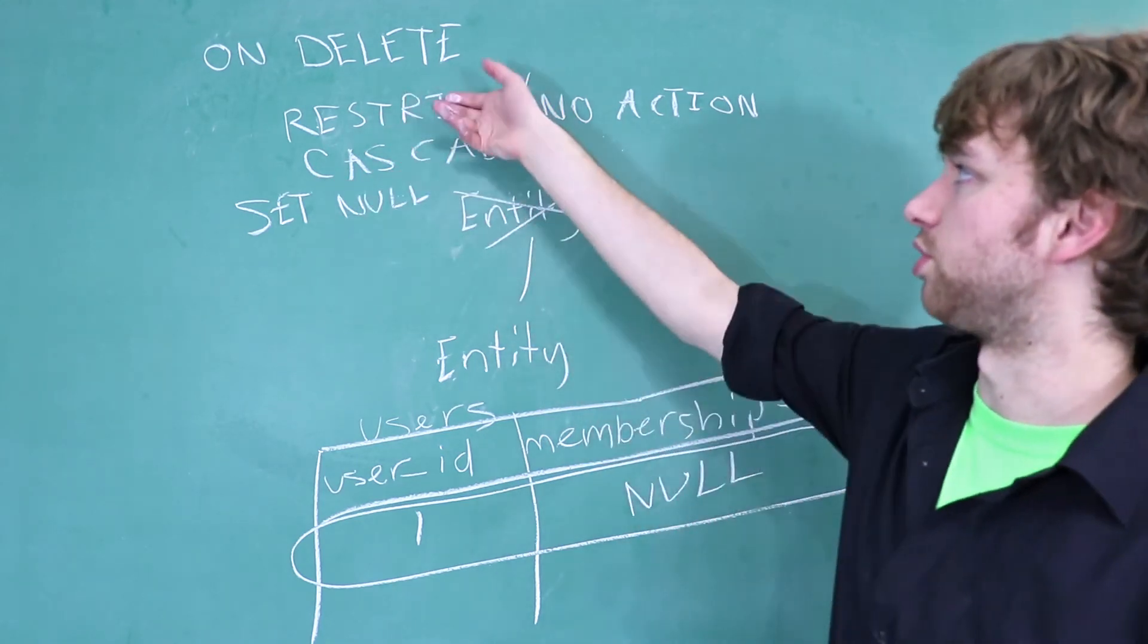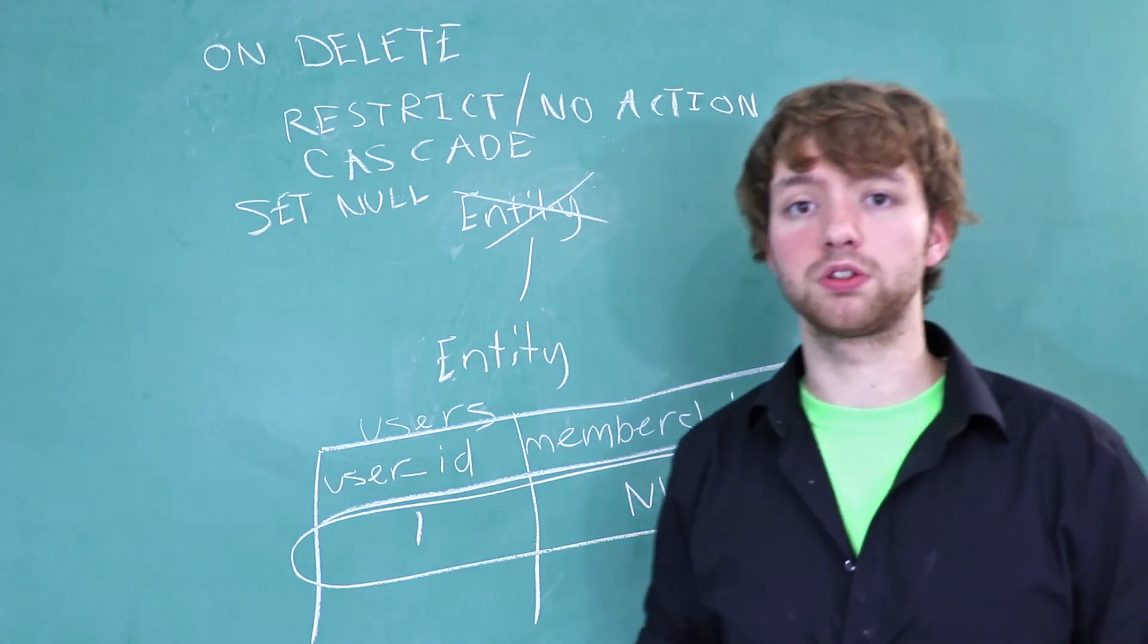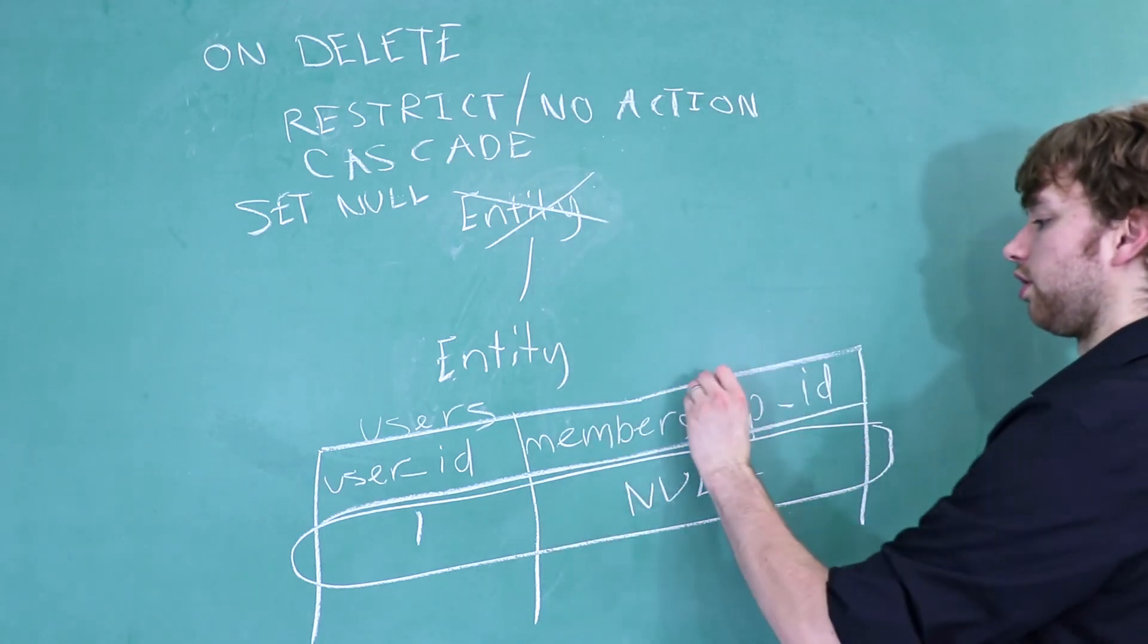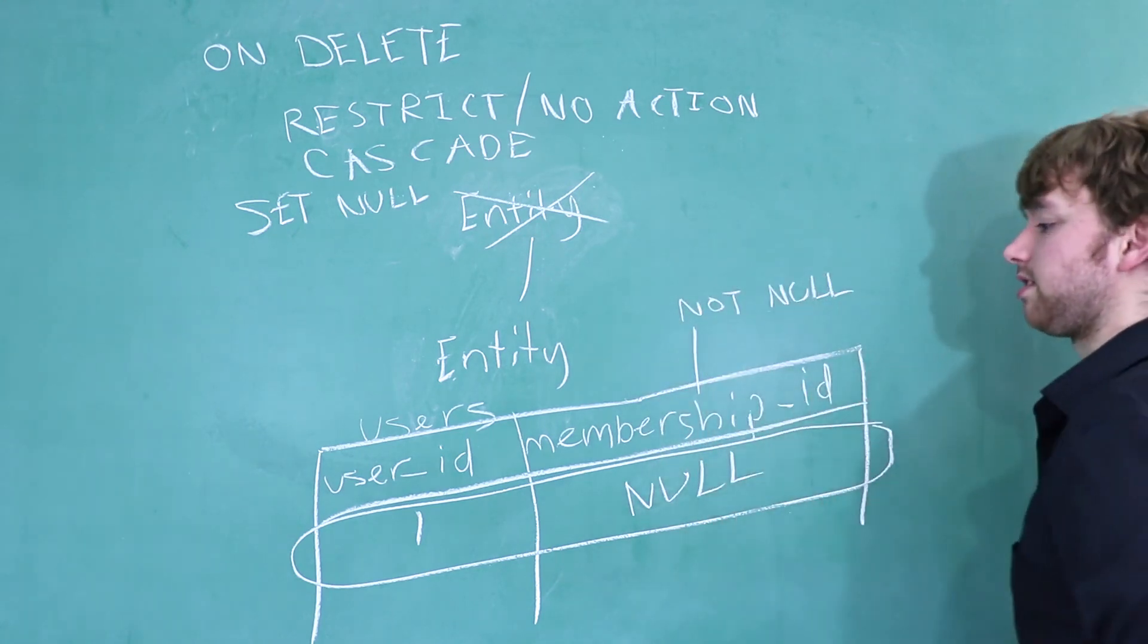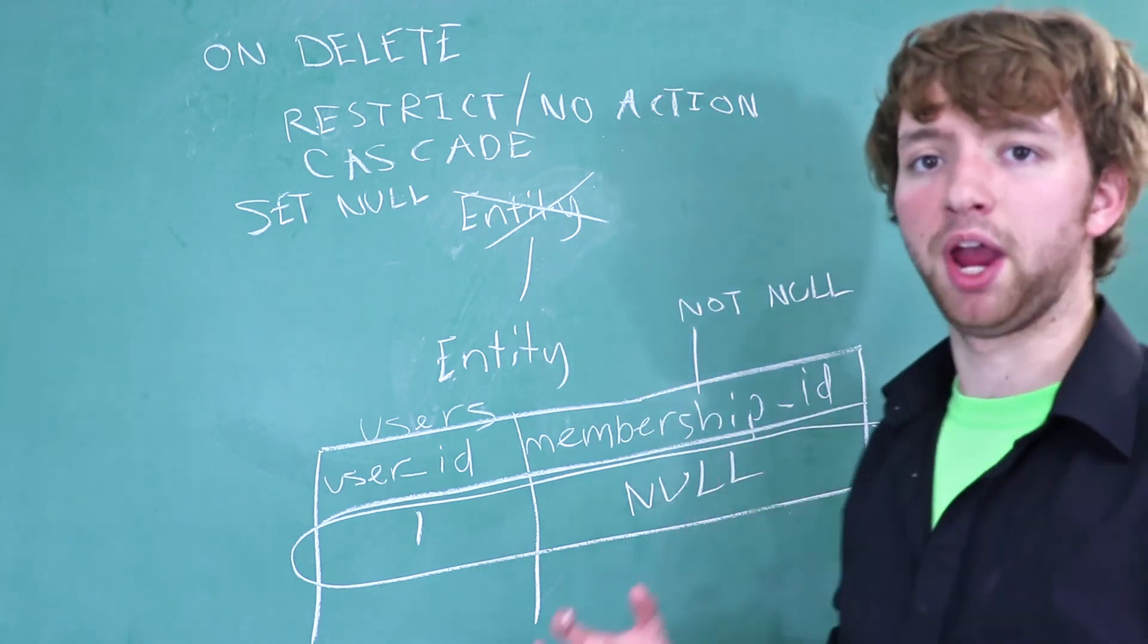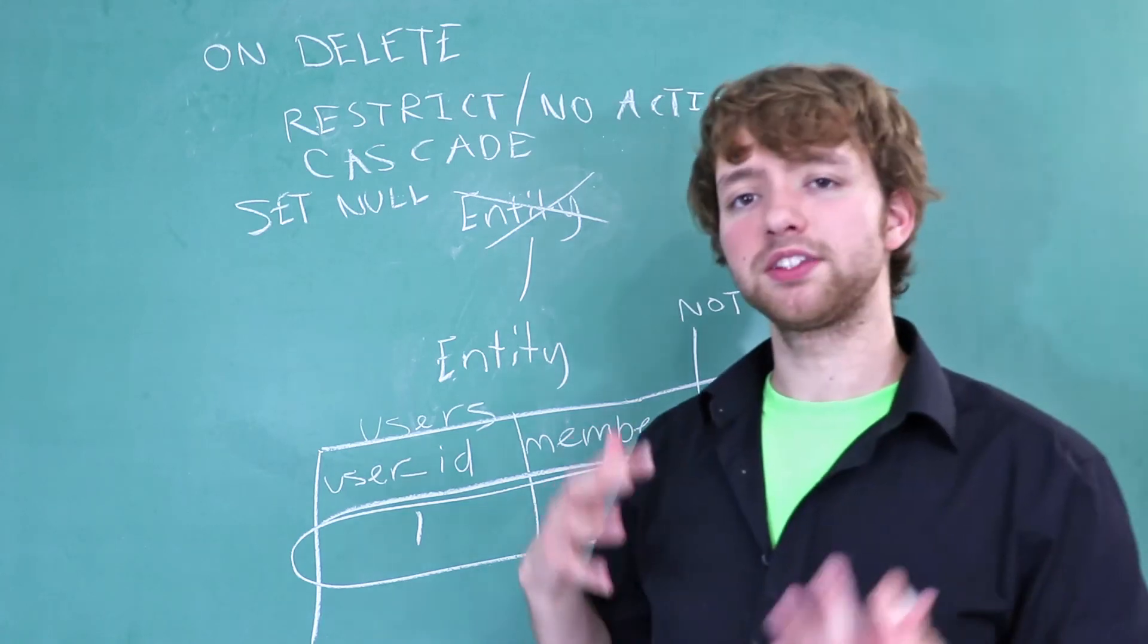Otherwise, you might set it to restrict if you don't want orphaned rows. Now, if you don't want nulls in this ever, then you're going to want to set this foreign key as not null. And this is basically saying this child has to have a parent for that column. That's a summary for on delete.